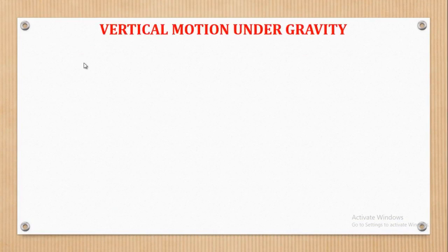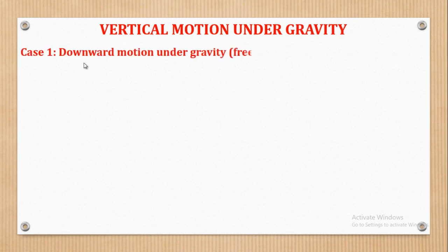Vertical motion under gravity is subdivided into two: one is upward motion under gravity and the other is downward motion under gravity. We are going to start with downward motion under gravity.